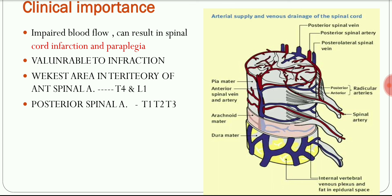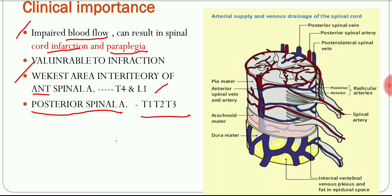Regarding clinical importance: impaired or decreased blood flow to the spinal cord can lead to cord infarction, which can lead to paraplegia. Two important vertebral levels are vulnerable to infarction. In the territory of the anterior spinal artery, the weakest areas are at T4 and L1. In the territory of the posterior spinal artery, the region of T1, T2, and T3 is the most vulnerable area for infarction.